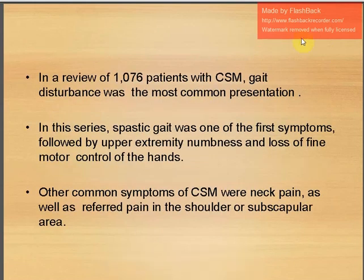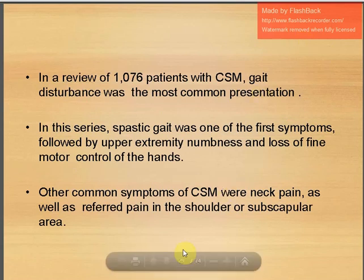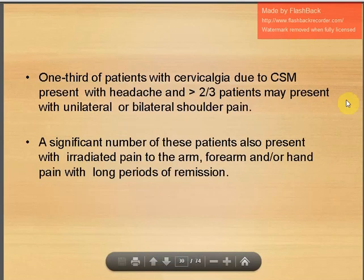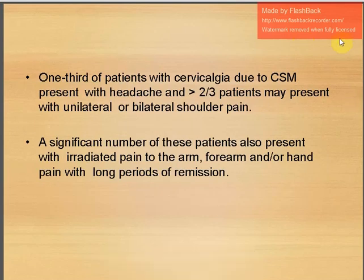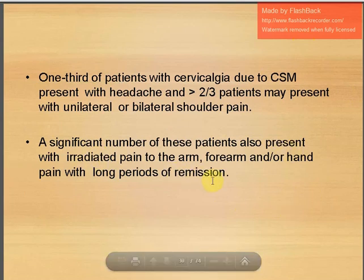In a review of 1076 patients with CSM, gait disturbance was very common. Spastic gait was one of the first symptoms, followed by upper extremity numbness and loss of fine motor control of the hands. Other common symptoms were neck pain and referred pain to the shoulder or subscapular area. One third presented with headache; more than two-thirds with unilateral or bilateral shoulder pain; and a significant number with radicular arm, forearm, and hand pain with long periods of remission.